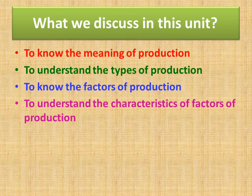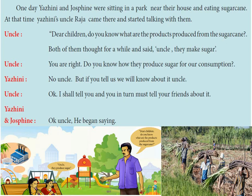He said, 'Dear children, do you know what are the products produced from the sugar cane?' Both of them thought for a while and said, 'Uncle, we get sugar.' Raja said, 'You are right. Do you know how they produce sugar for our consumption?' And Yarni replied, 'No uncle, but if you tell us, we will know about it.'